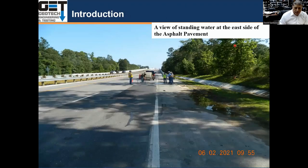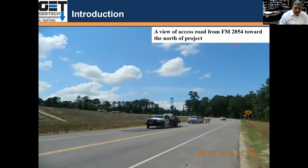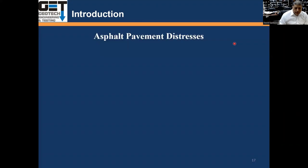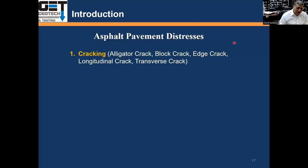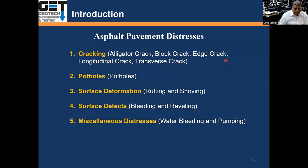These are some pictures of the project taken in 2021. You can see a nice asphalt road in some areas with two lanes, drainage ditches along the road. We saw a lot of different types of asphalt distress out there: cracking, alligator cracking, block cracks, edge cracks, longitudinal cracks, transverse cracking, potholes, surface deformation, surface defects, bleeding, raveling, and miscellaneous distress including water bleeding and pumping of the soils.